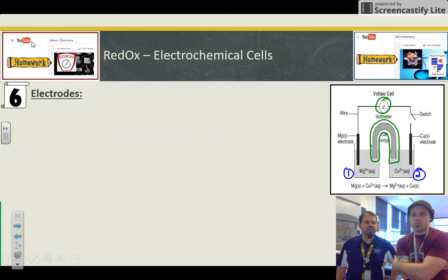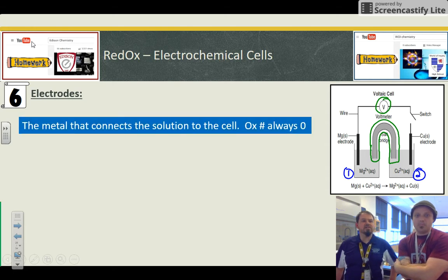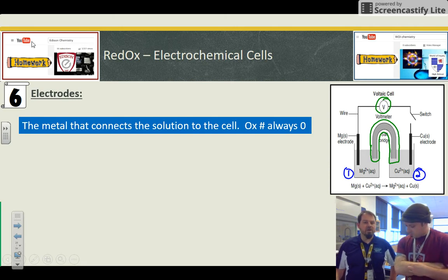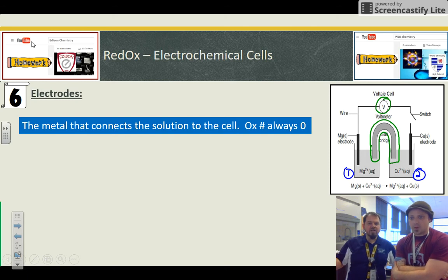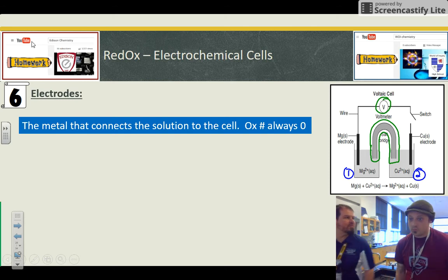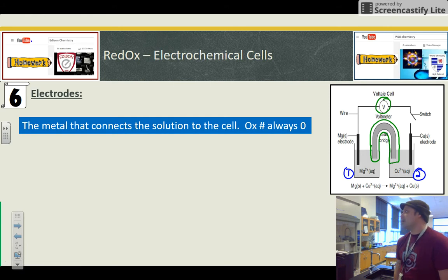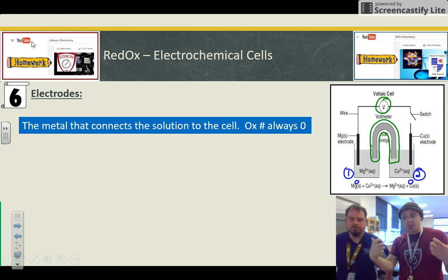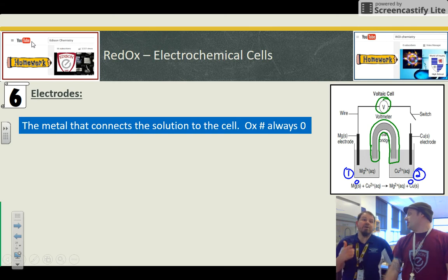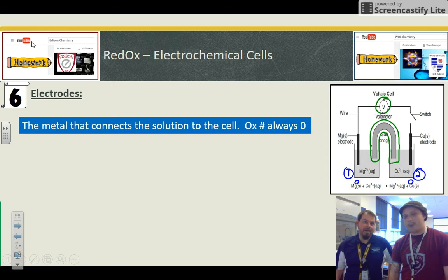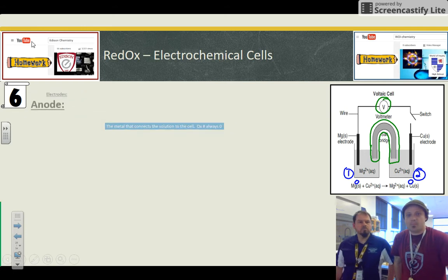So in this picture, we do see electrodes. That is the metal that connects the solution to the actual cell. The oxidation number of the metal is always zero. And if you look, you'll see a magnesium electrode solid. And in the equation, it's magnesium solid that should have a zero. And same with the copper. So you got pure elemental metals with oxidation state zero as your electrodes dipped into solutions that contain their ions, so that some transfer of electrons can happen.